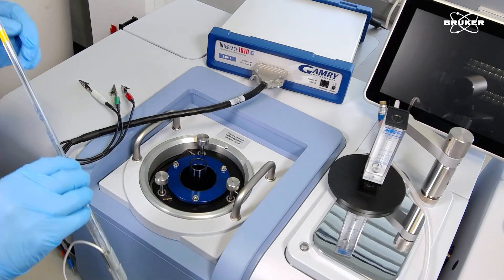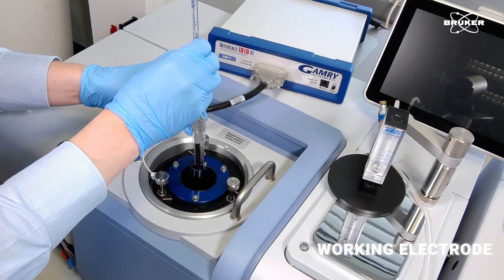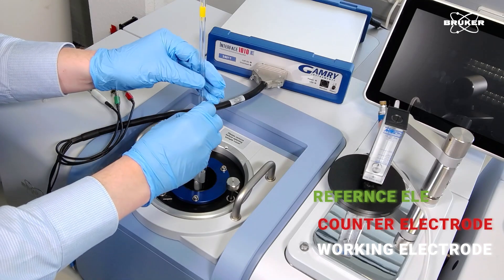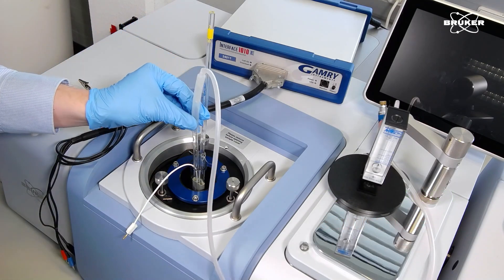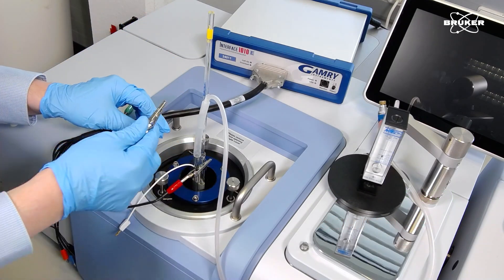Then, install the set of electrodes: a gold working electrode, a platinum counter electrode and a reference electrode. Finally, introduce the nitrogen purge and connect the electrodes to the potentiostat.